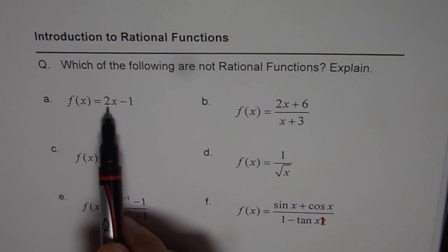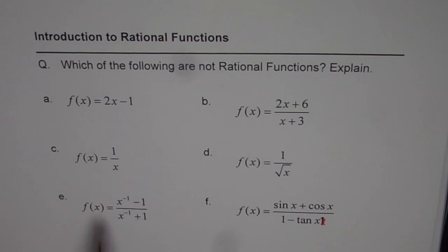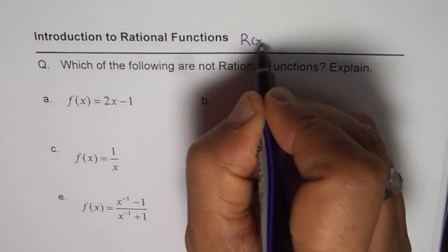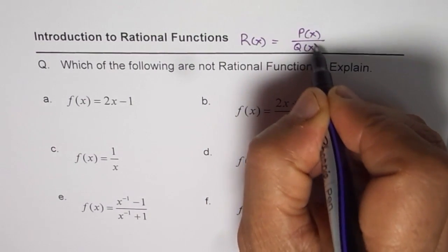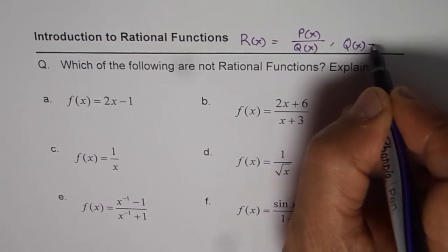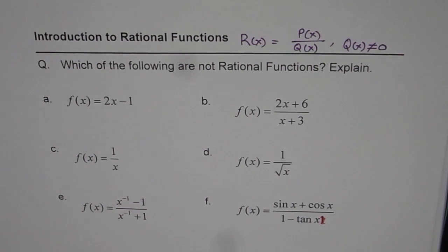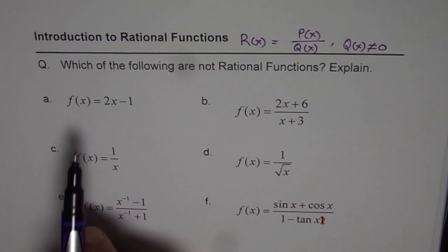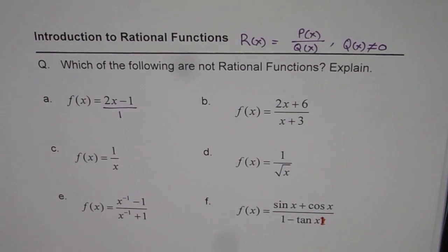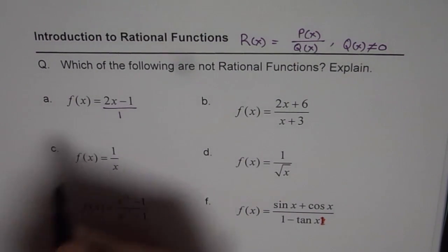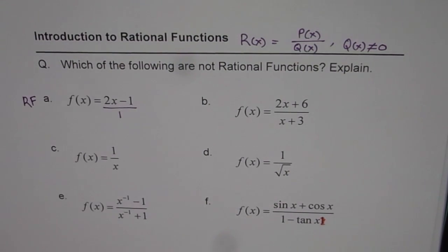The first one is f(x) equals 2x minus 1. At times, students think that this is not a rational function since it is not written as something over something. So let me remind you what rational functions are. Rational functions, we say r(x) is equals to quotient of 2 polynomials. So p(x) over q(x) where q(x) is not equal to 0. Now, at times people say this is not a rational function. But remember, anything could be written as something over 1 which is also a polynomial. So this one is a rational function.